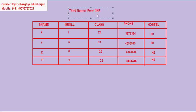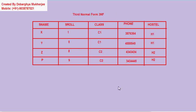In 3NF we will first see whether this relationship is in 2NF or not. On S role, every other field is dependent, because for a particular student role you can have only one name, class, phone number, and hostel. But this hostel is dependent on class.